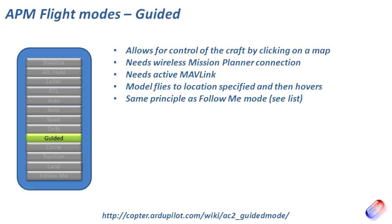Guided mode is quite cool. You stay connected to the model using MAVLink, with Mission Planner running on a PC or Android device. By clicking on the map, it sends that GPS location to the model and the model flies to it — fly by wireless essentially. Rather than using the transmitter you fly the model through Mission Planner. It's useful for aerial survey work where you can click on the part of the sky you want the machine to sit in.